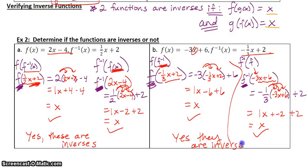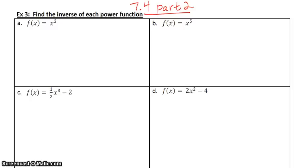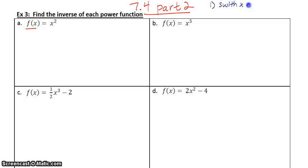This is the end of part 1 for 7.4. Welcome to 7.4 part 2. On the back page of your notes, we're going to be finding more inverses and talking about the horizontal line test. We're doing the same thing as example 1, but now the functions involve things like x squared and x to the fifth. They'll also be given in official function notation with f of x. Step 1: switch x and y. Step 2: solve for y.